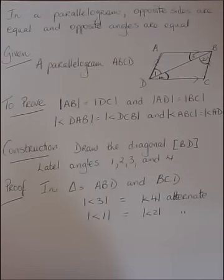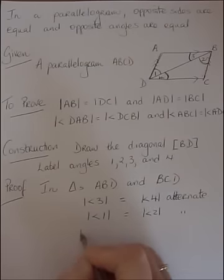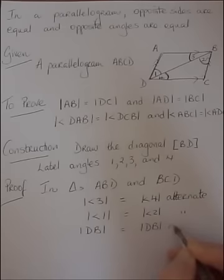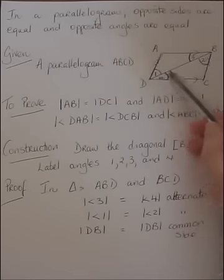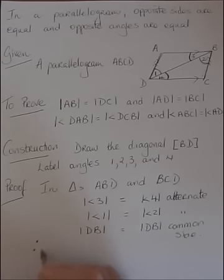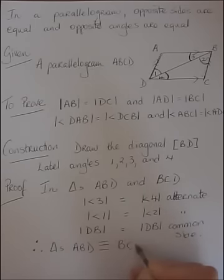Both triangles share the side DB, so the length of DB equals the length of DB — it's a common side. I've now got two angles and the included side in both triangles, so they are congruent. I'm using the congruency symbol and stating the reason: angle-side-angle (ASA).